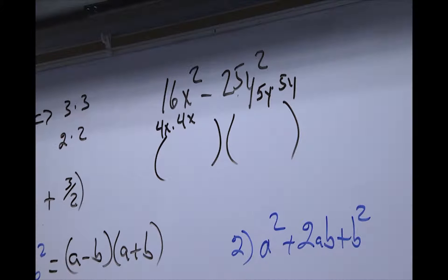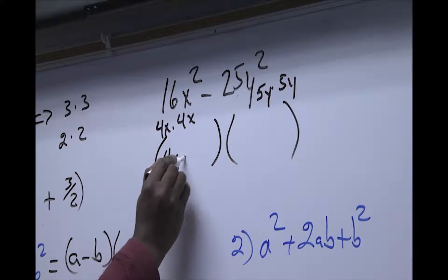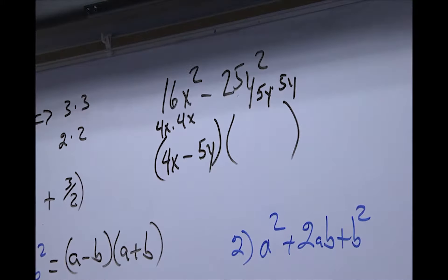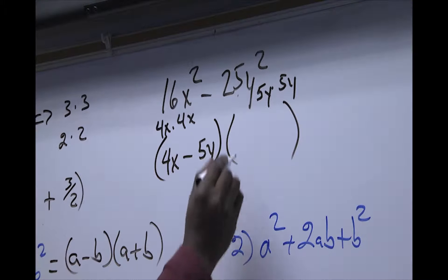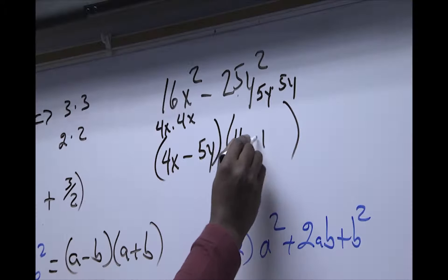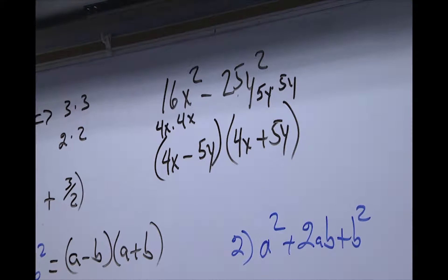So when we combine those things we will get 4x - 5y if you apply the rule and then here we are going to get 4x + 5y. One being negative, one being positive. So this is what we are referring to as the difference of two squares.